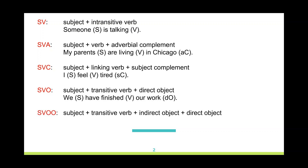The fifth basic structure could include a subject, a transitive verb, an indirect object, and a direct object. Look at the example: 'she' — this is the subject — 'has given' — this is a transitive verb phrase — 'me' — indirect object — 'the letter' — direct object.